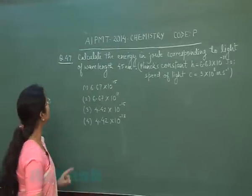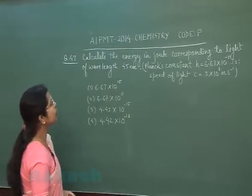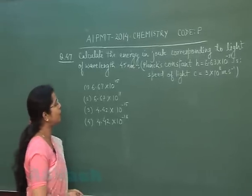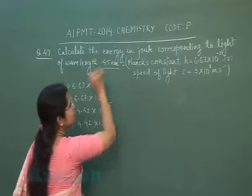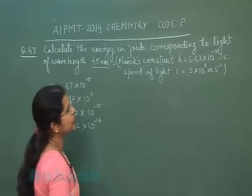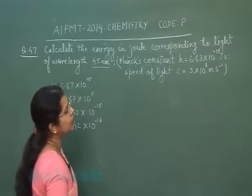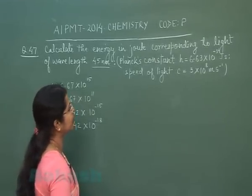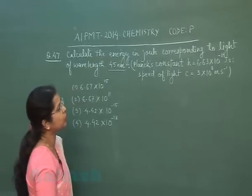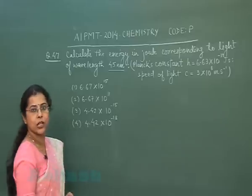Next question, question number 47: Calculate the energy in joules corresponding to light of wavelength 45 nanometers. Planck's constant is given as 6.63×10⁻³⁴ joule-second, and the speed of light c is 3×10⁸ meters per second.